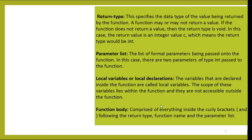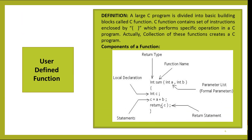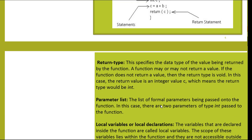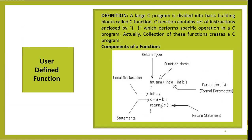Local variable or local declaration: variables that are declared inside the function are known as local variables. 'int c' — c is a local variable declared inside the definition of the sum function. The scope of these variables lies within the function and they are not accessible outside the function. The accessibility of local variable c is only within the sum function.